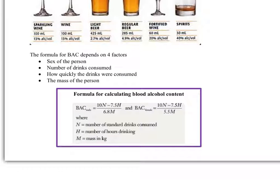We have two formulas here - one for men and one for females. The male formula is 10N minus 7.5H over 6.8M. Sounds scary, but not really. N is the number of standard drinks, H is the number of hours drinking, M is the mass in kilograms. It's just a straightforward formula that you'll be given. The blood alcohol content for females is slightly different because females are smaller. Let's look at what this looks like in practice.